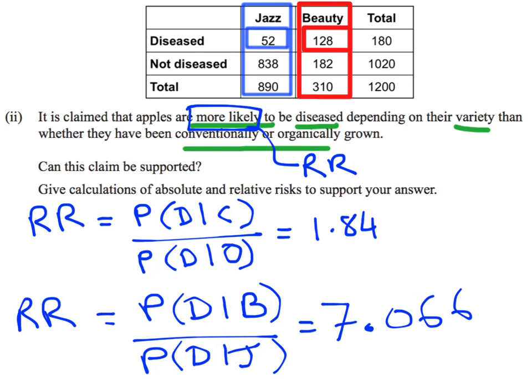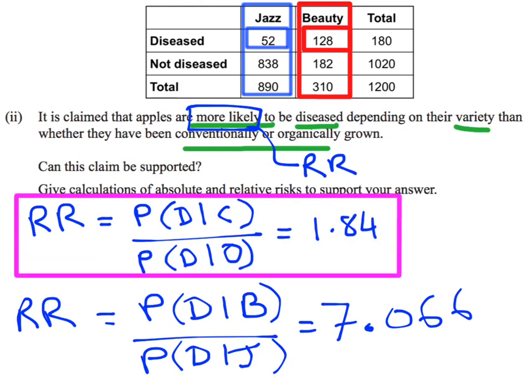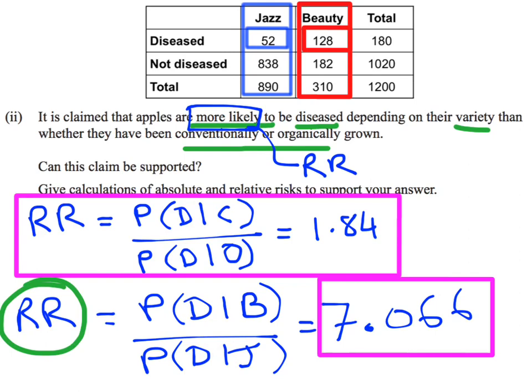Compare that to the previous relative risk that we had. That previous relative risk was referring to how it was grown, whether it was grown conventionally versus organically. The conventional growing methods meant that an apple growing conventionally was 1.84 times more likely to be diseased compared with the organically grown ones. So that 1.84 is actually a much smaller number than the 7.06 that we've found with the variety. That tells me the relative risk for the varieties is much larger than the relative risk for the growing method.